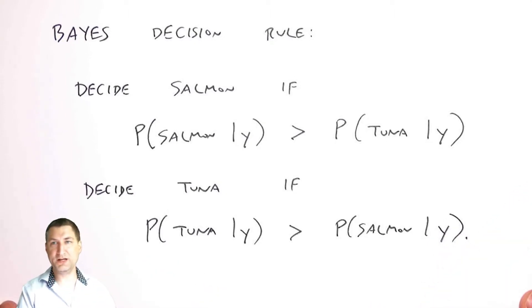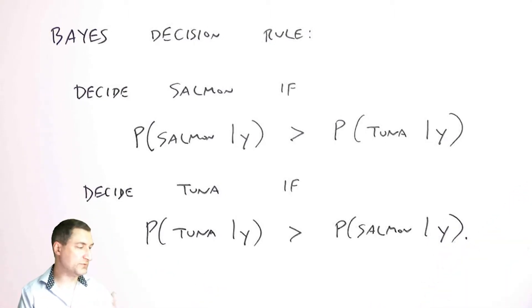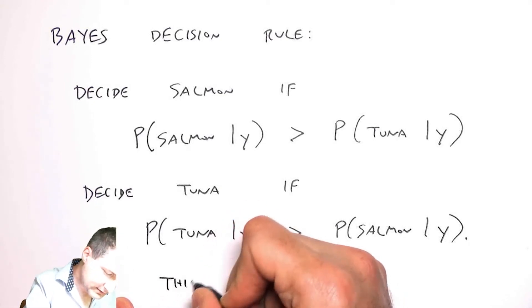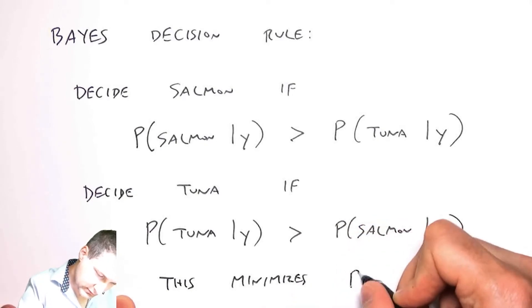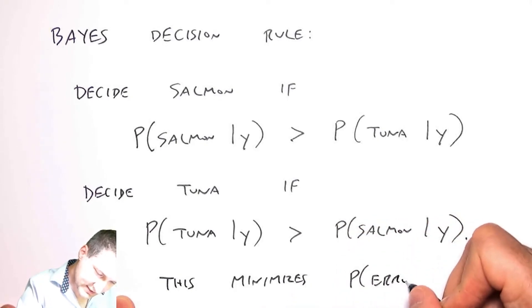This will minimize the overall probability, the average probability that I make a mistake. What I'm trying to do is minimize the probability of error, which is what I want to do in this context.